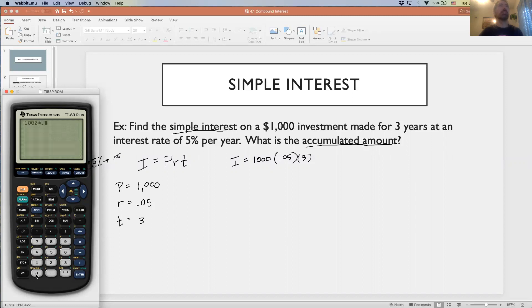I'm going to calculate the interest, showing you how to do this in the TI-83. We're saying 1,000 times 0.05 times 3, which is 150. That is the amount of interest. If you invest $1,000 into a savings account that earns 5% per year for three years, the bank would give you $150. You would make $150 off of that $1,000 initial investment. That's the simple interest.